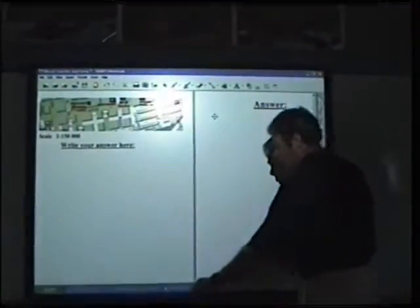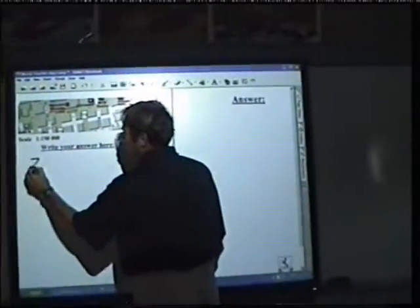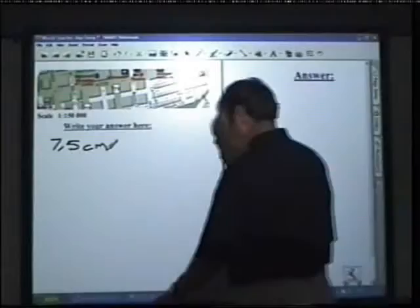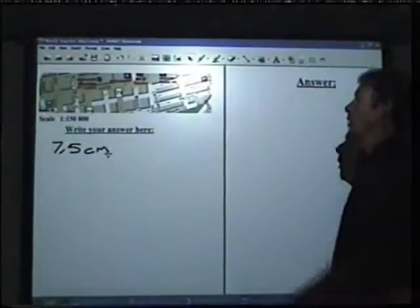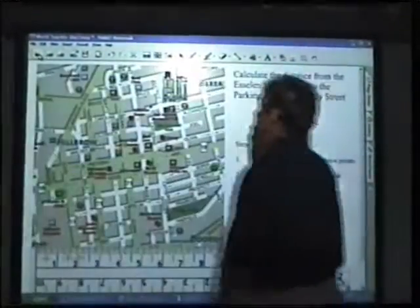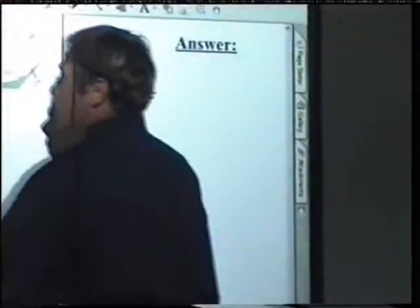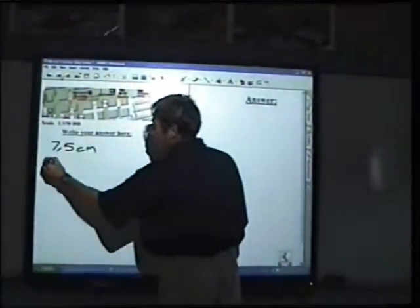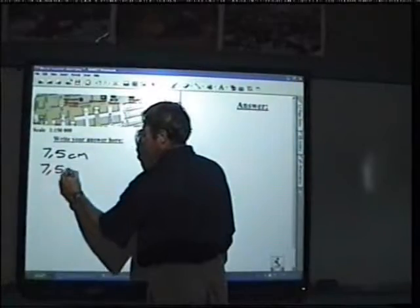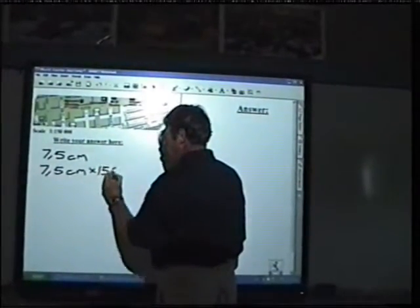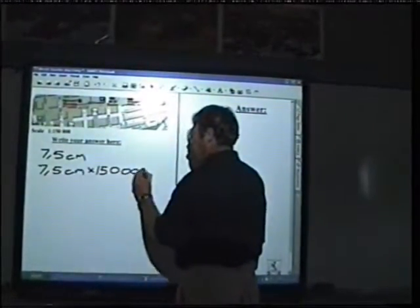So the first step would then be for them to write the answer there which is 7.5 cm. If they forget what they need to do they can go back to the next step and see multiply the distance with the scale. So the next step would then be to say 7.5 cm multiplied by the scale which is 150,000.